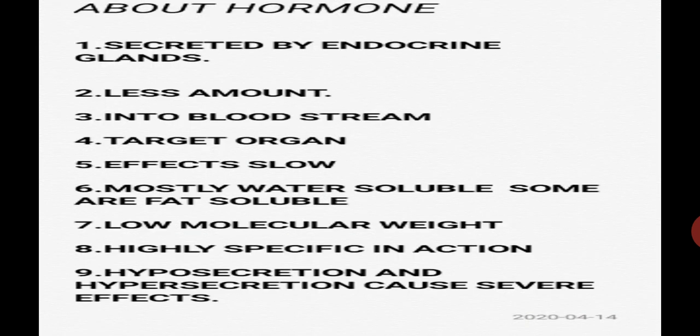Now let's see what a hormone is and the properties of hormones. Hormones are chemical substances or chemical messengers which are secreted by the endocrine glands at one place, but their action can be seen on another part of the body. That other part of the body is called the target organ. This is the definition of a hormone.